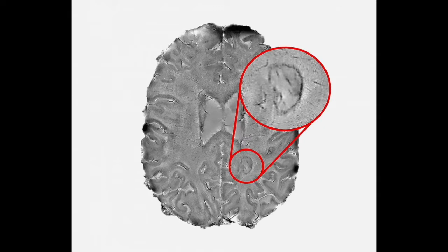Neuroscientists sometimes create lesions in the brains of animals to see the effect on the animal's behavior. Brain lesions can be made by removing brain tissue, destroying tissue with a laser, or eliminating tissue by injecting a drug.